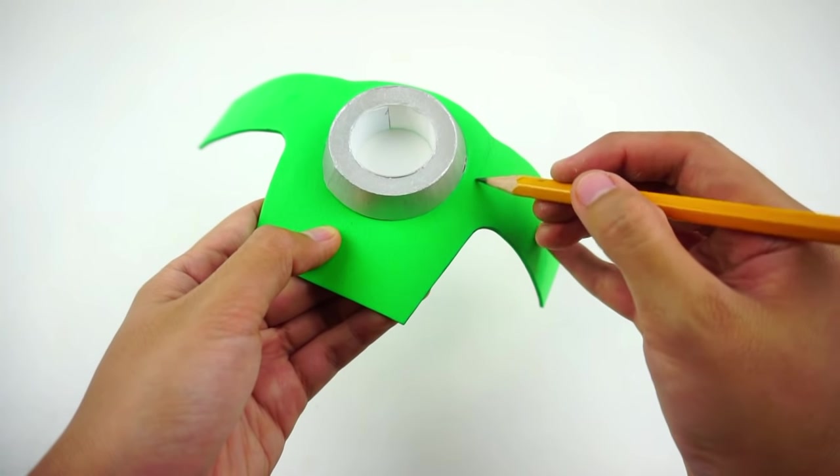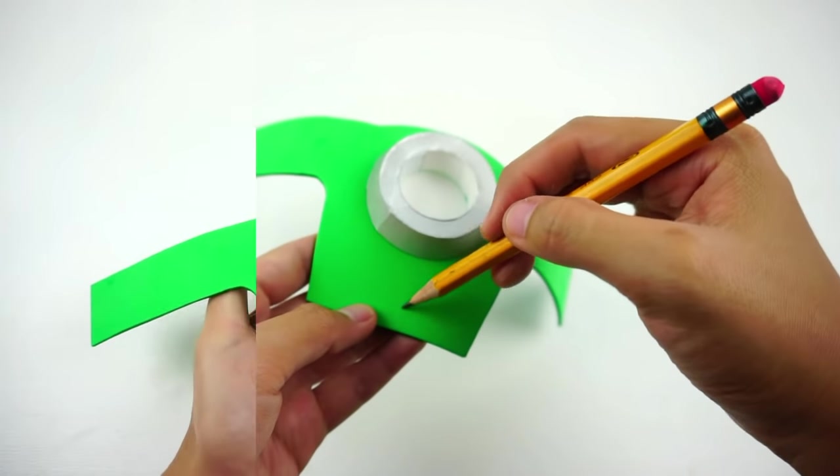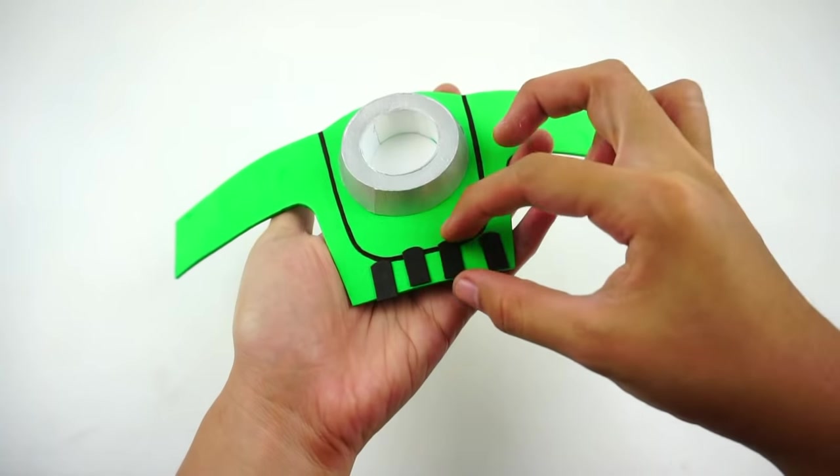Draw this line onto the watch strap with a black marker. After that, glue the buttons as demonstrated.